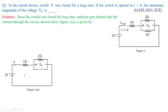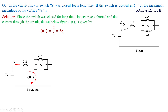The overall current I(0-) would be 2 divided by 1, which is nothing but 2 amperes. This is the important point, and we should also know that I(0+) would be also equivalent to 2 amperes.